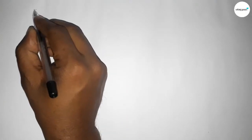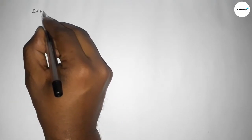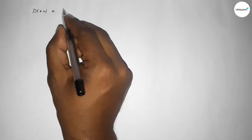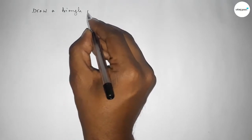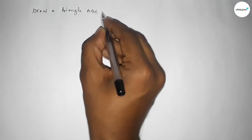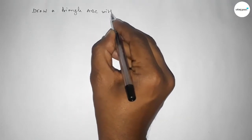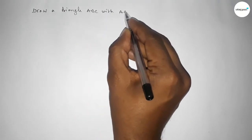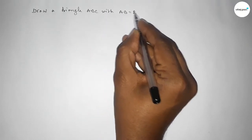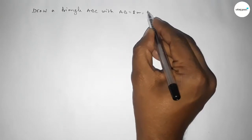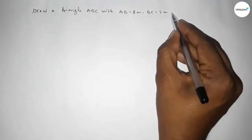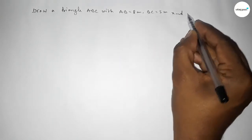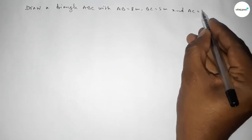Hi everyone, welcome to a size share class. Today in this video we have to draw a triangle ABC with AB equal to 8 centimeter, BC equal to 5 centimeter, and AC equal to 4 centimeter. So let's start the video.